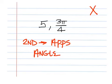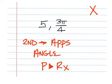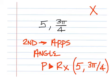Remember, we are starting with a polar coordinate, so if you scroll down you want to start with P. That should be number 7 and it should look like this: P, then an arrow, R, then X. Hit that and it gives you this — you'll type in 5 comma 3π divided by 4.